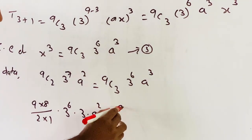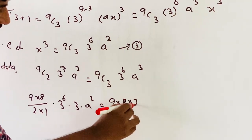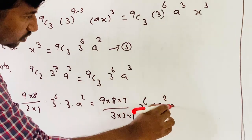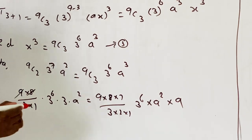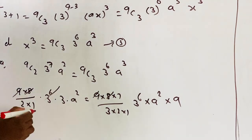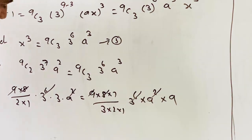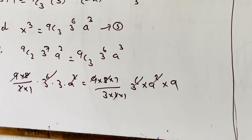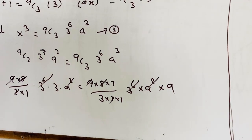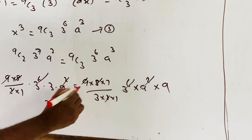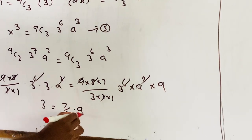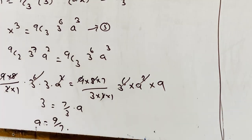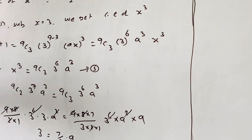Expanding 9C3 = (9×8×7)/(3×2×1). The 3^6 and a² terms cancel from both sides. After cancellation and simplification: 3 = (7/3) * a, therefore a = 9/7. So the value of a is 9/7.